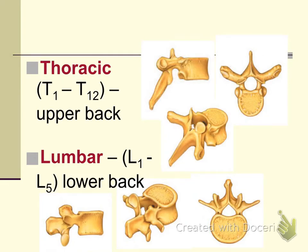The next 12 vertebrae are called the thoracic vertebrae, numbered T1 through T12. What is special about the thoracic vertebrae is that the back portion of the ribcage is formed by the attachment of the ribs to these vertebrae — cervical and lumbar vertebrae do not have attachments for the ribs. Another distinct feature is that the body is slightly bigger and taller than the cervical vertebrae, it has a long spinous process, and unlike the cervical vertebrae, it does not have the transverse foramen.